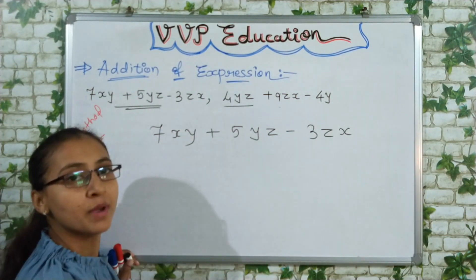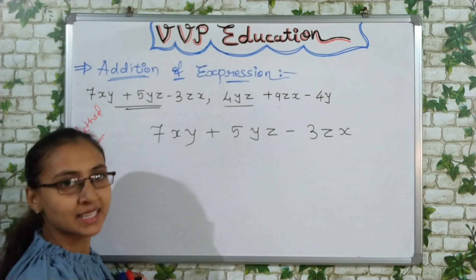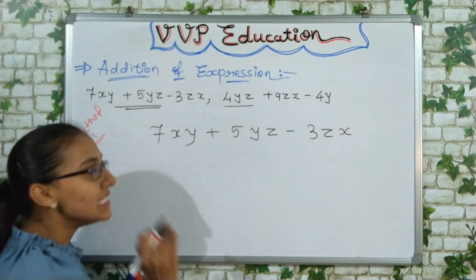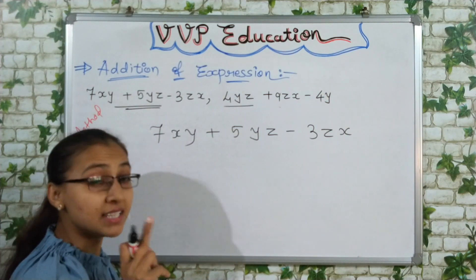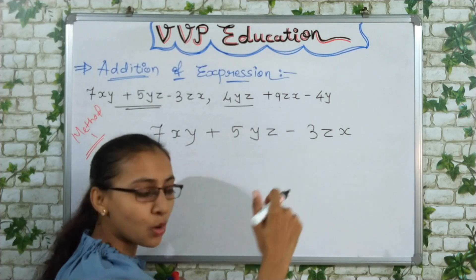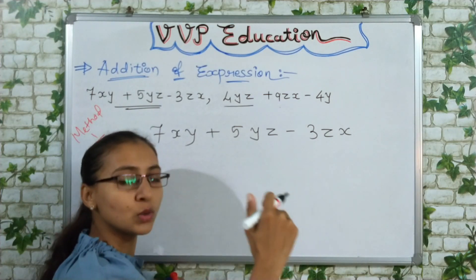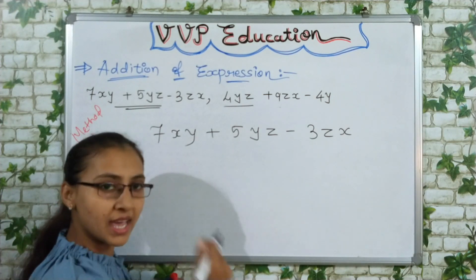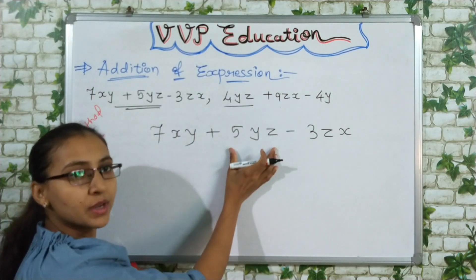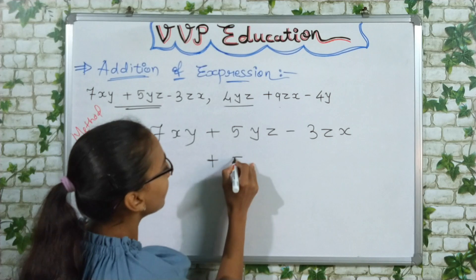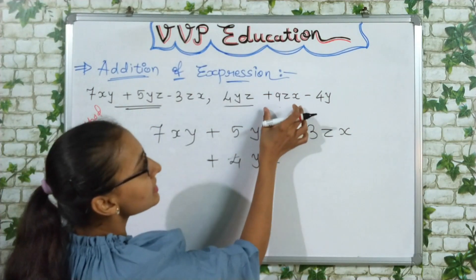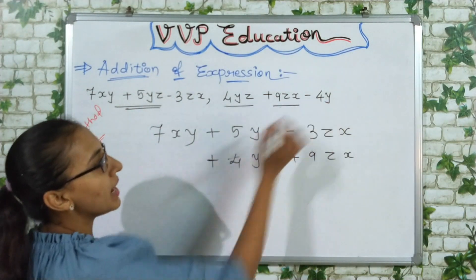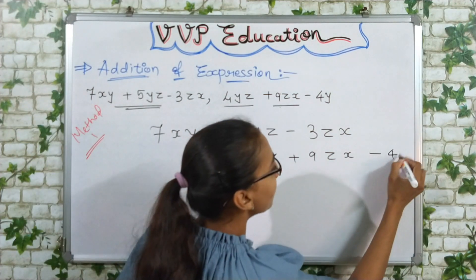Now, minus 4y — there is no such term in the first expression. And 7xy — there is no like term for it in the second expression. So both 7xy and minus 4y have no like terms. The terms that have like terms are arranged below their corresponding like terms, just like in decimal addition where we align digits by place value. The unlike terms are placed aside.